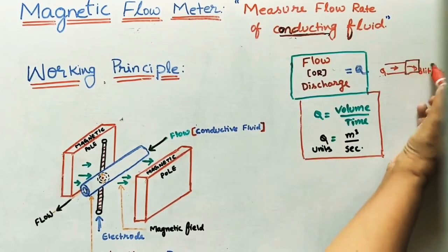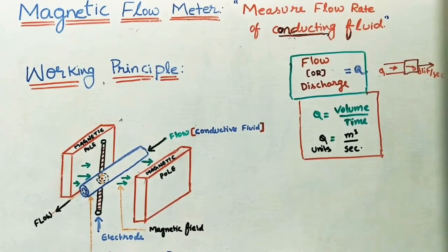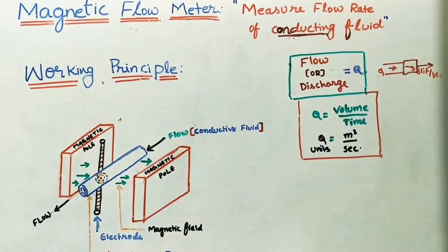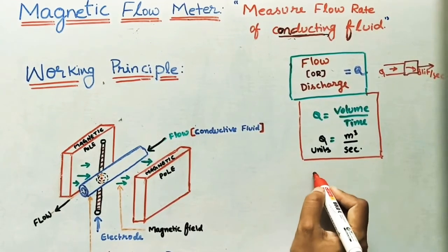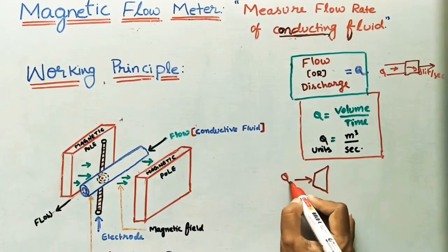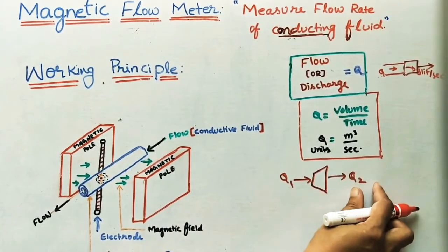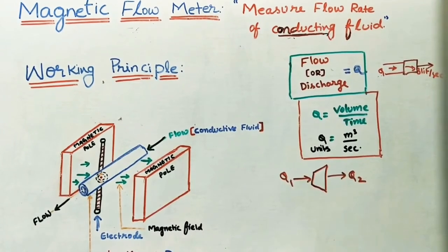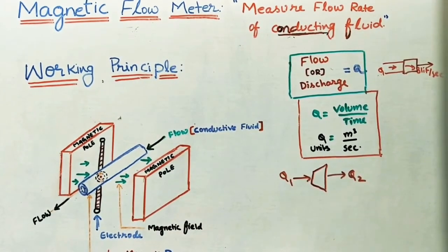We connect a flow meter to the pipe to find the Q value. Flow meters are used in petrol stations to measure how much fuel is dispensed and calculate the cost accordingly. In pumps, turbines, and engines, we connect flow meters at the inlet and outlet to find discharge. They are also used in the medical field for measuring blood flow. For different purposes, different types of flow meters are used.